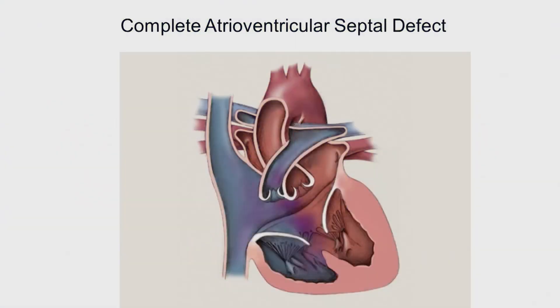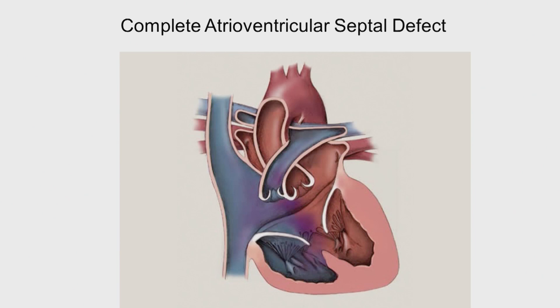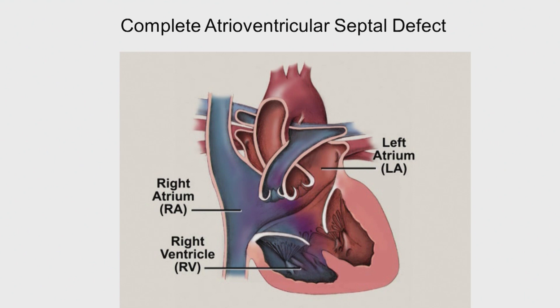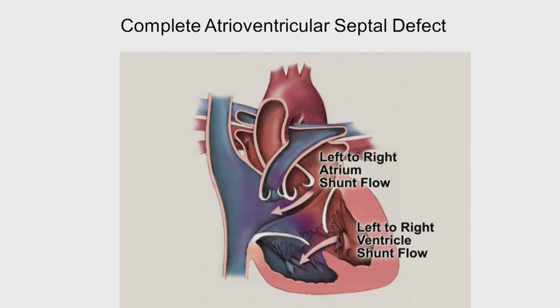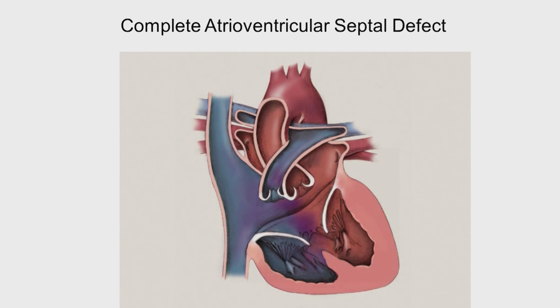There are a lot of different types of AV canal defects. The first one is complete atrioventricular septal defect, or canal defect. This animation shows the anatomy: the right atrium on the blue side has deoxygenated blood, the right ventricle, left atrium, and left ventricle. There's a big hole in the middle where there should be tissue — a large ventricular septal defect below and an atrial septal defect above — and the flow of blood goes left to right instead of staying on its proper side.